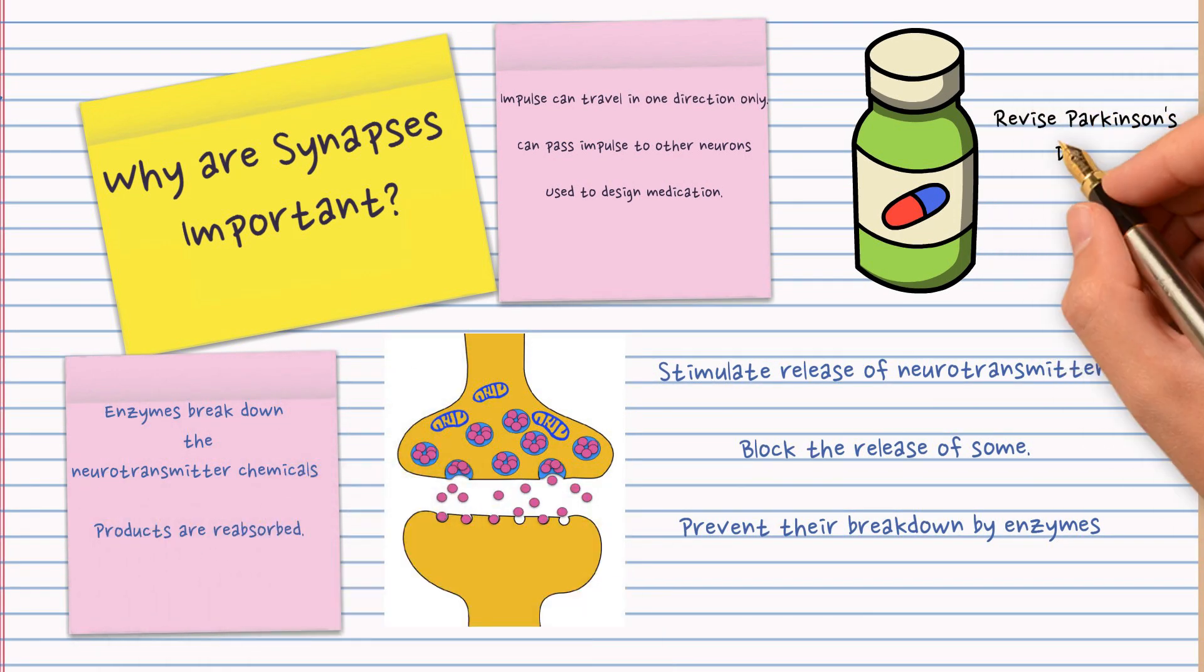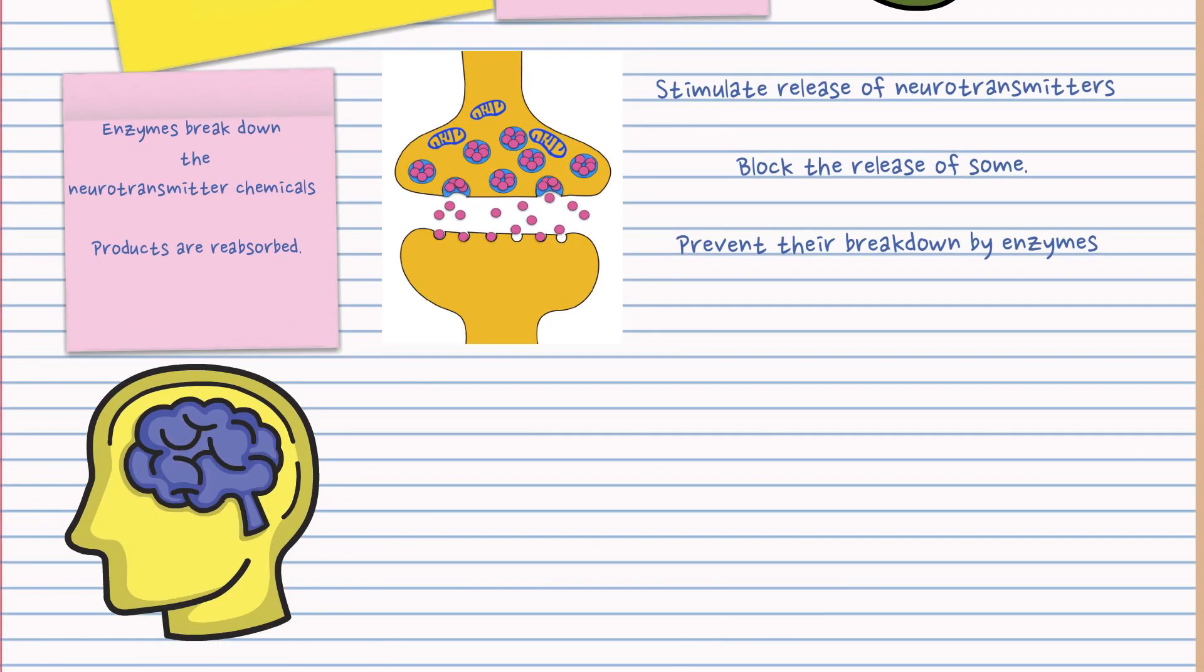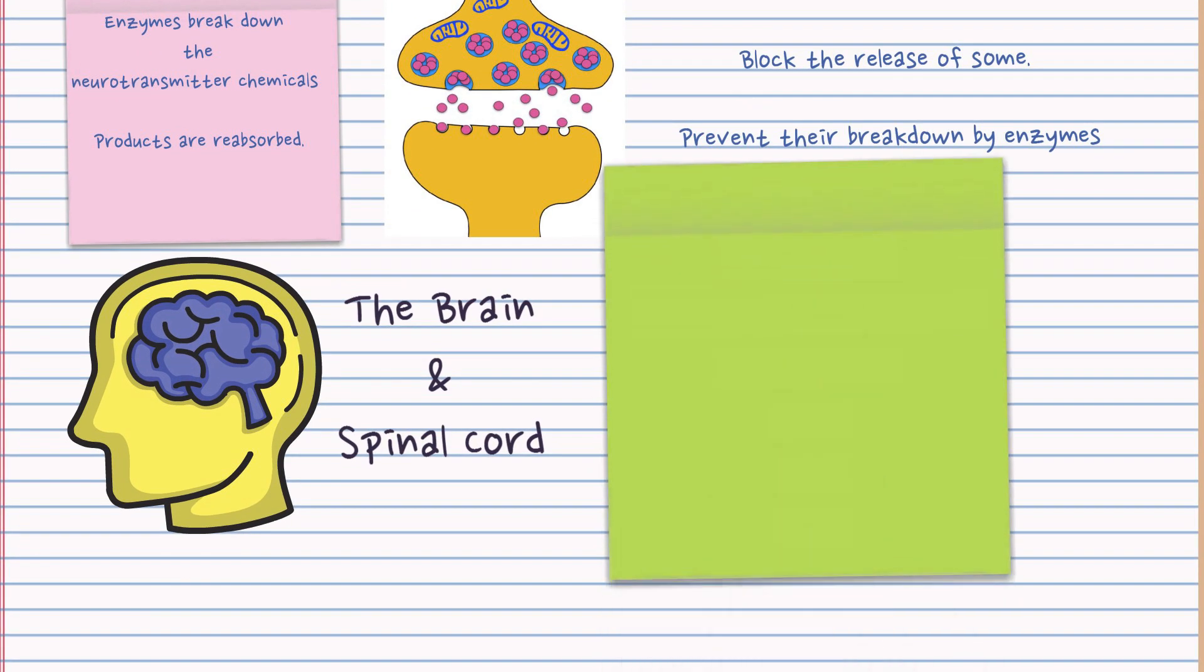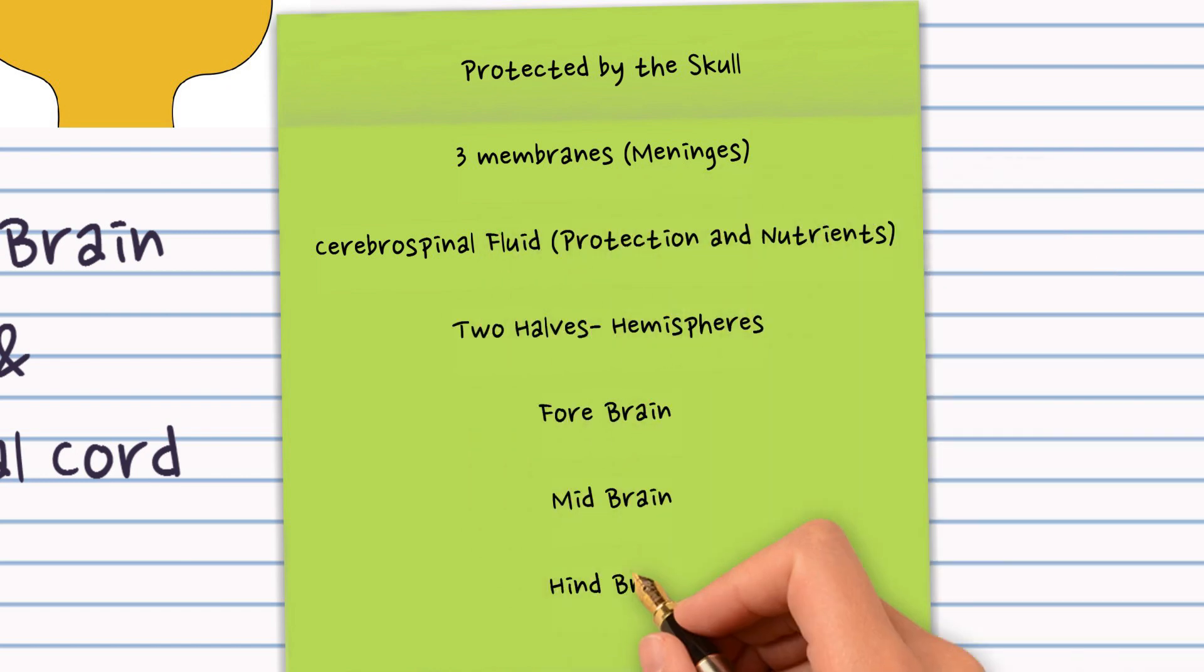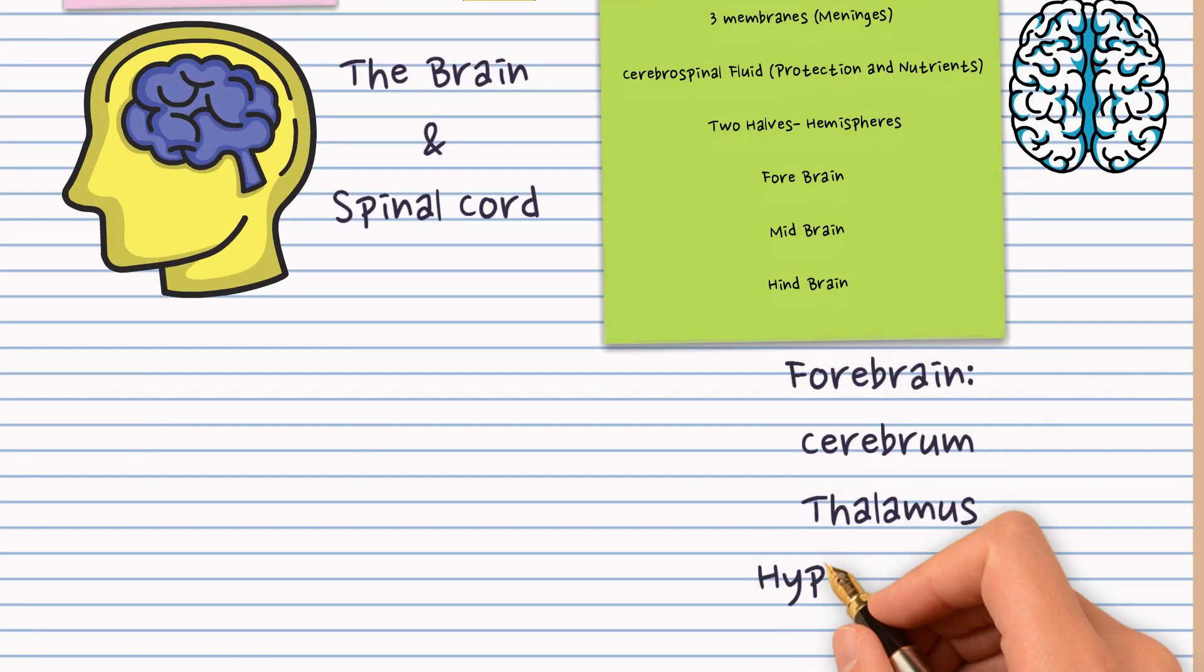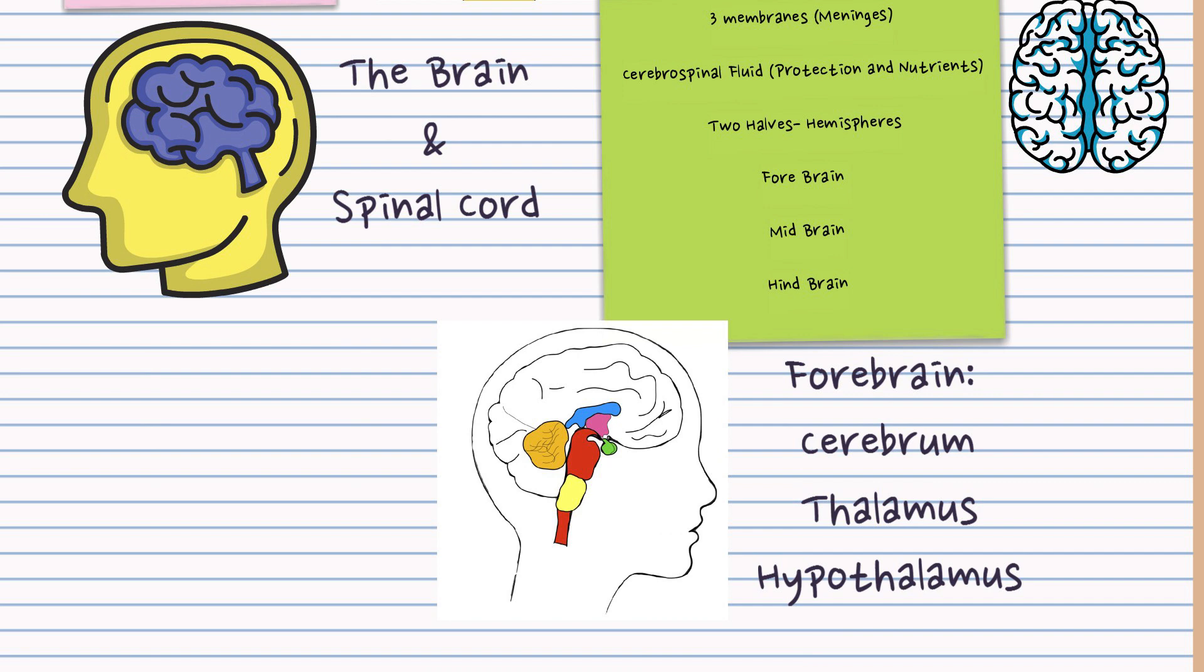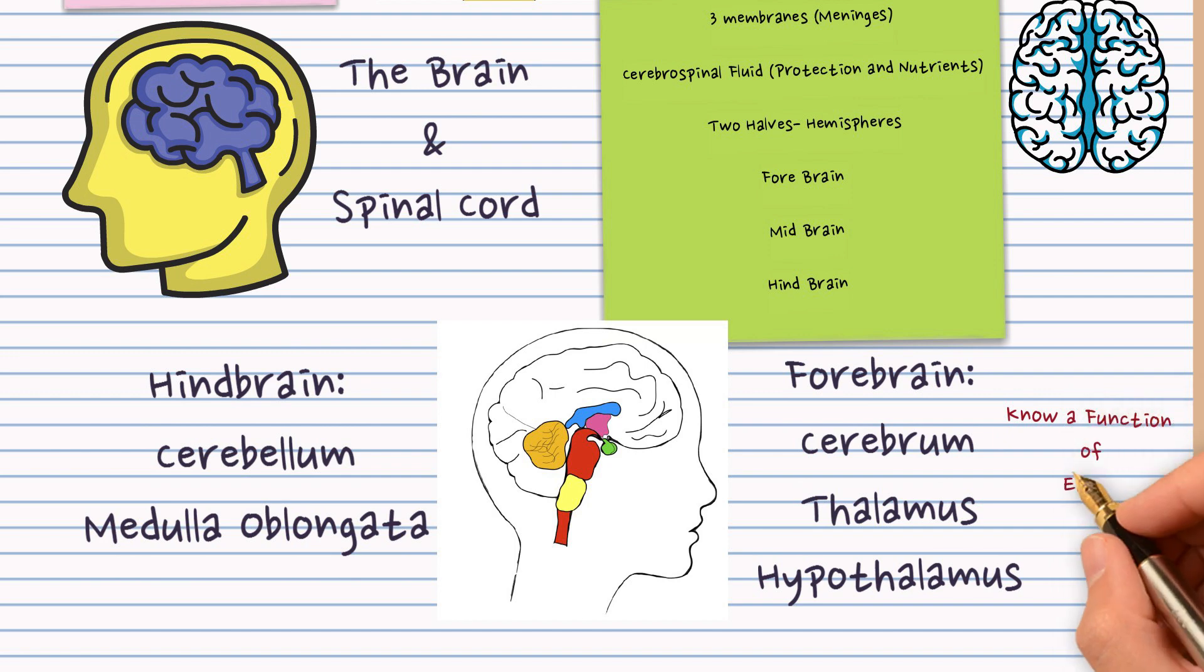Finally the last section is to do with the brain and the spinal cord. So you know the brain is protected by the skull but it's also surrounded by three membranes and those three membranes are called the meninges and in between those is that fluid cerebrospinal fluid. Know that the brain is divided into two hemispheres and the forebrain is made up of the cerebrum, the thalamus and the hypothalamus and the hindbrain is made up of the cerebellum and the medulla oblongata. Know a function of each of those parts and be able to identify them on a diagram.